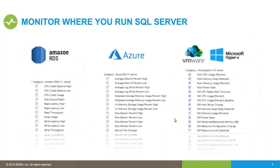These are some of the metrics specific to each environment — Amazon RDS, Azure, VMware, and Hyper-V. On top of everything we gather from the SQL side and operating system, we're also gathering environment-specific information for whichever platform you're running on.